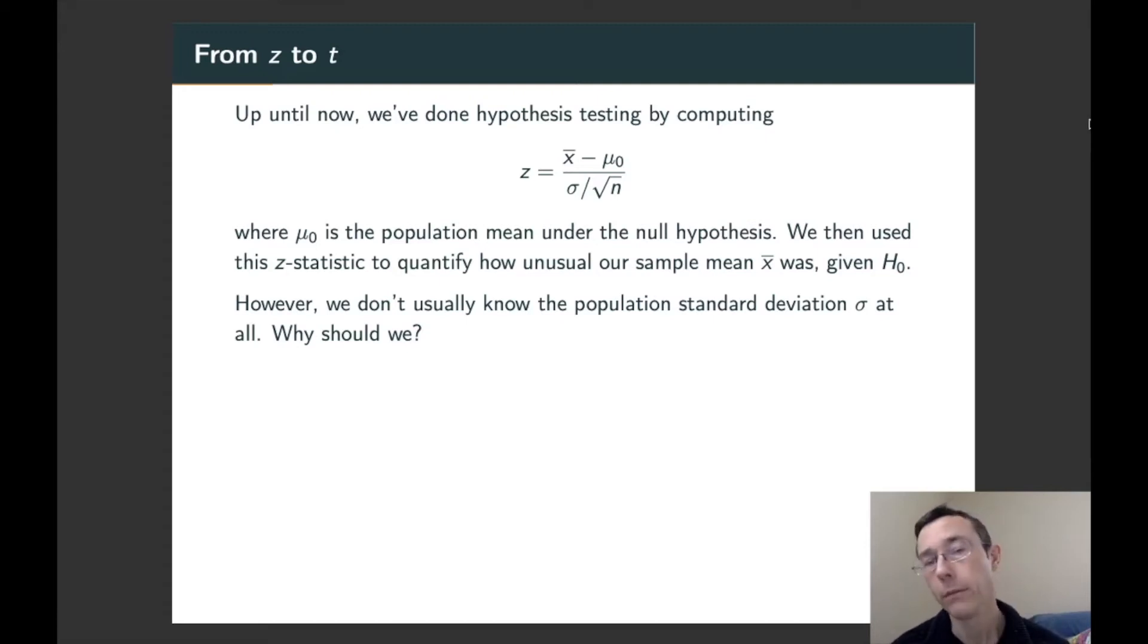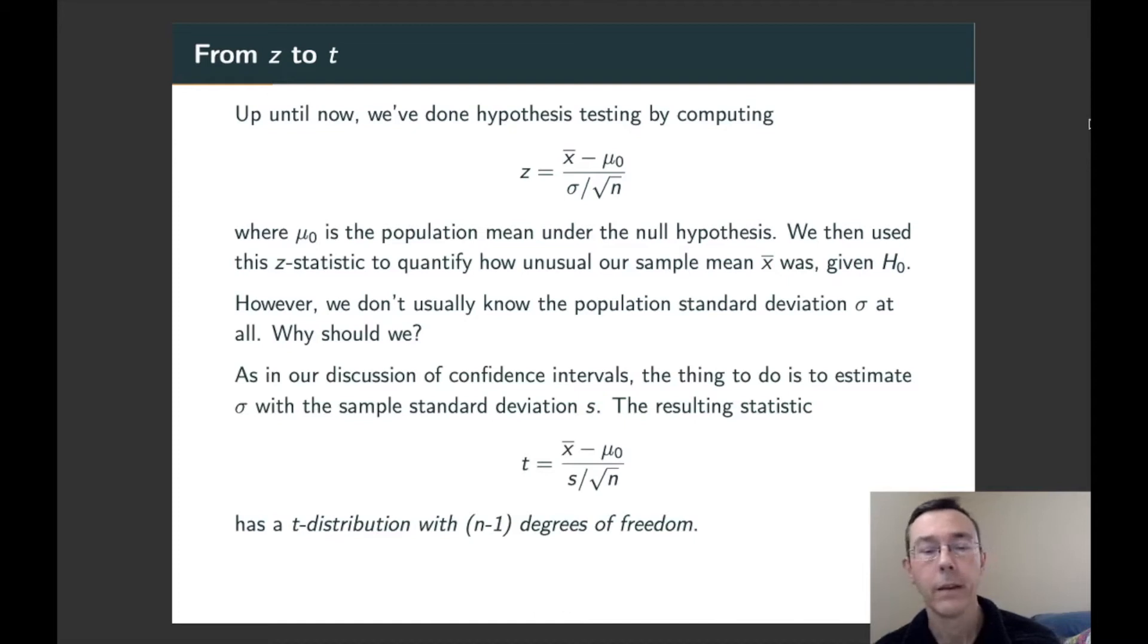The whole point of this kind of statistical inference is to get information about the population using information about the sample. So what should we do in that situation? The short answer is we should estimate the population standard deviation with the sample standard deviation and do exactly the same calculation as before.